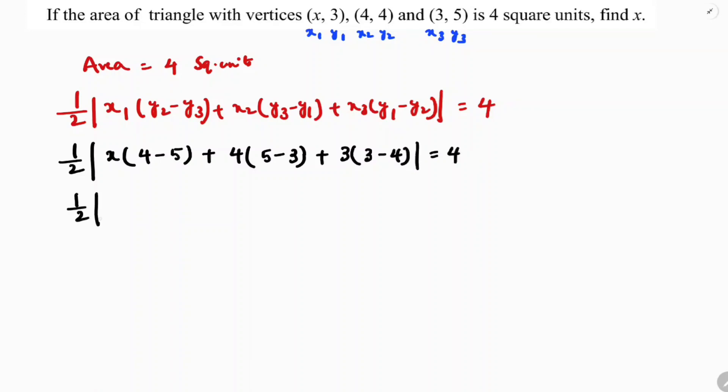Half times the absolute value of: x times (-1) plus 4 times (2) plus 3 times (-1) equals 4.